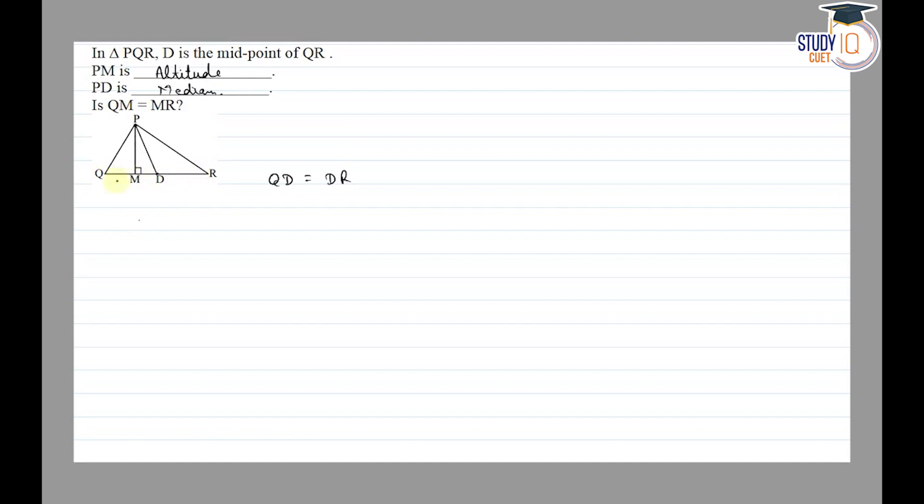QM is not the midpoint of QR, so QM is not equal to MR because D is the midpoint of QR. Here PM is the altitude, PD is the median, and QM not equal to MR.